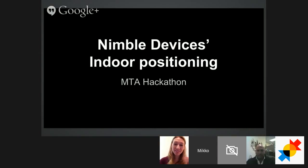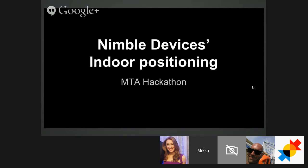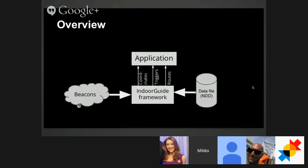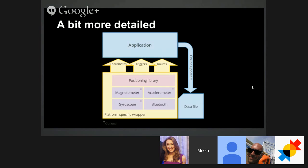Thanks Serena. Hopefully you can see my slides. I'm Miko Virkila from Nimble Devices — we do indoor positioning for mobile apps. I'll briefly walk you through how to use our SDK, what the features are, and answer any questions you may have. As Serena mentioned, the indoor positioning works off of beacons. Those are installed at Grand Central Station now. There's also a data file which we call an NDD file, which contains information for the positioning. You can drag and drop the indoor guide framework into your project to then receive coordinates, triggers, and routes to your application. Internally, we also use gyros, magnetometers, and accelerometers to increase the accuracy of the positioning.